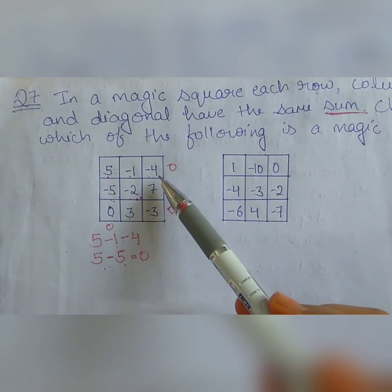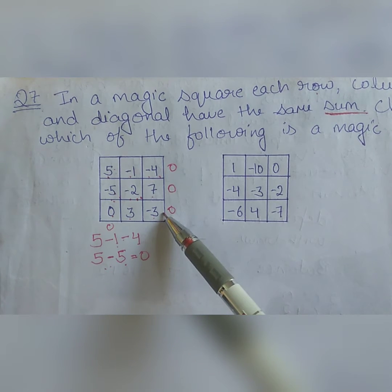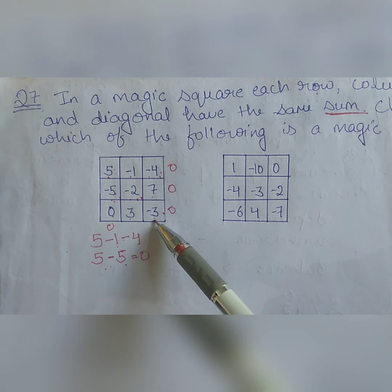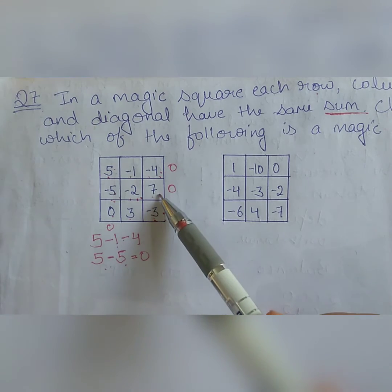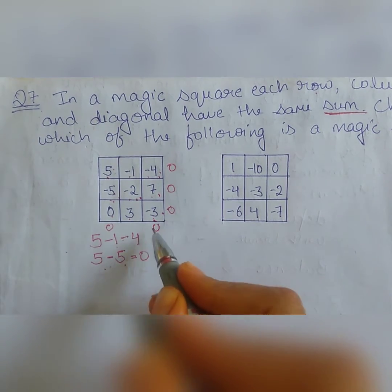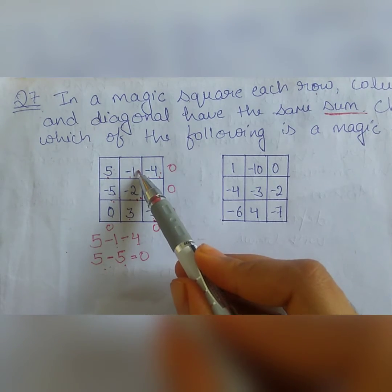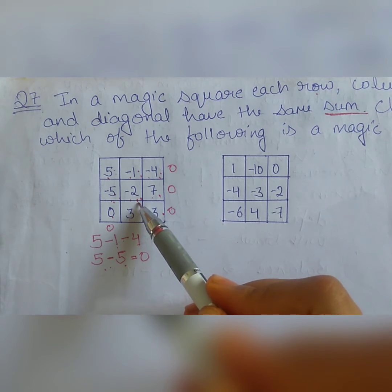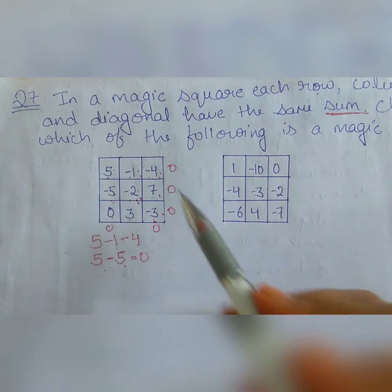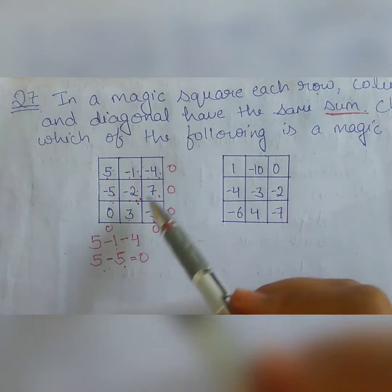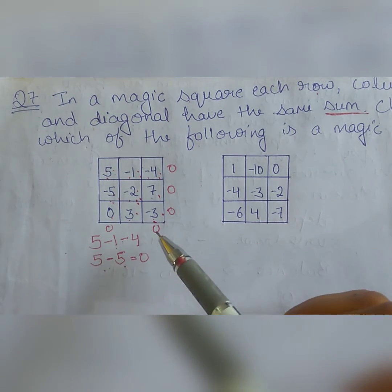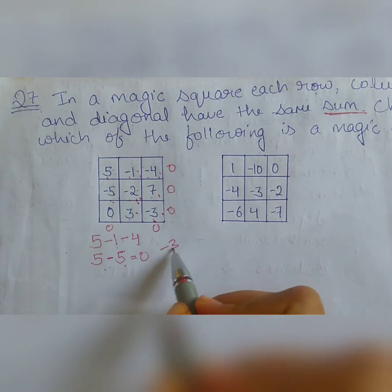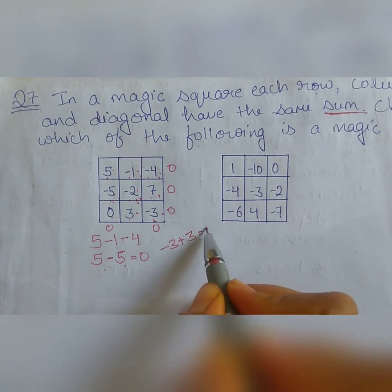Here 3 minus 3 is 0, clear. Now in this, here minus 4 and minus 3, first we will take the digits that are in minus. Minus 4 and minus 3, 4, 5, 6, 7, this became minus 7. Minus 7 and plus 7 is 0. Here 2 plus 1 is 3. Why plus? Because both are in minus and minus minus becomes plus. So minus 2 and minus 1 equals minus 3, and this is plus 3. Minus 3 plus 3 becomes 0. Minus 3 plus 3 equals 0.